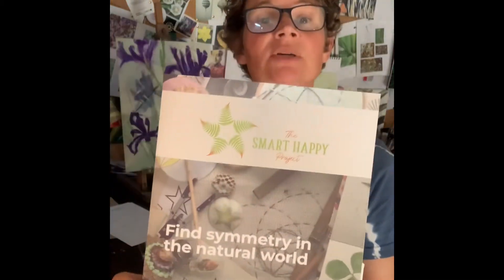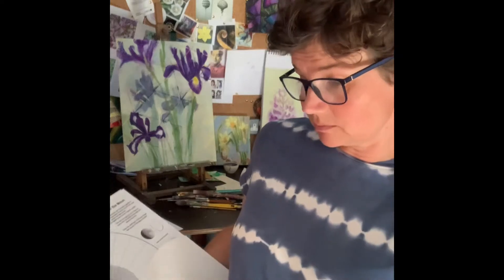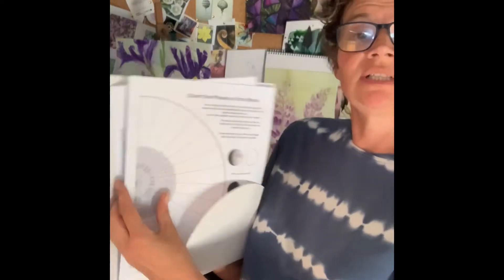So we use this printout which is the solstice and equinox model. It comes as part of the new pack I've put together launching this summer - Find Symmetry in the Natural World, family activities that encourage an observation of the patterns and shapes that we can see in nature.